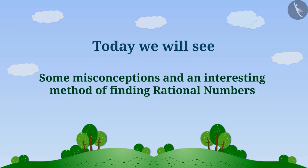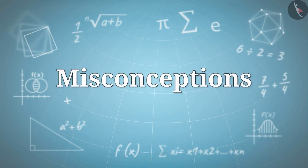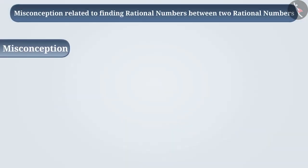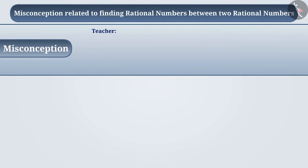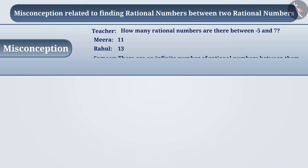Today we will see some misconceptions and an interesting method of finding rational numbers between two rational numbers. Can you tell me who amongst them gave the correct answer?